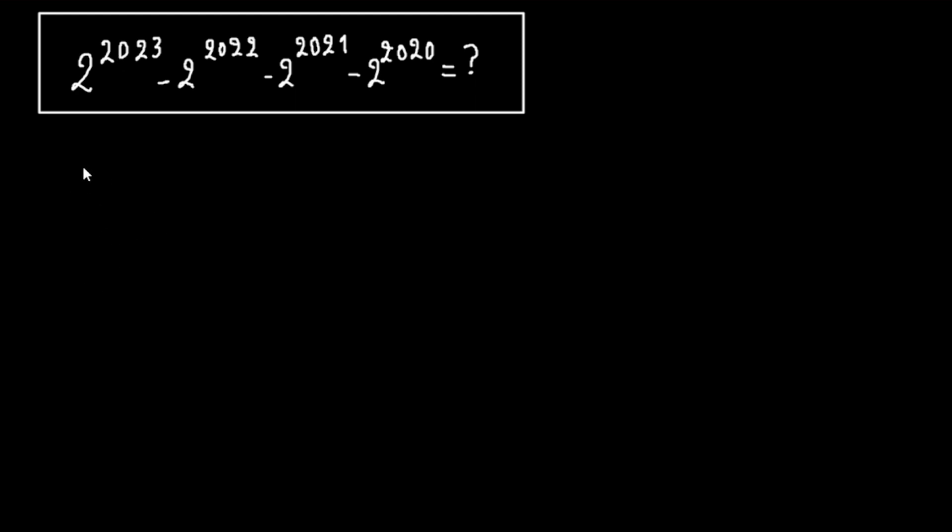So we can write the first one as 2 to the 2020 plus 3, minus 2 to the 2020 plus 2, minus 2 to the 2020 plus 1, minus 2 to the 2020.